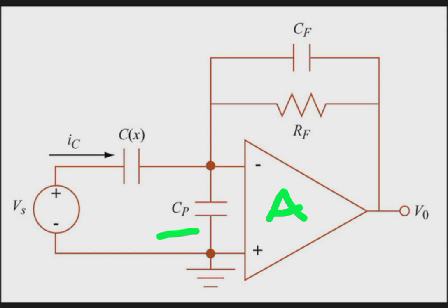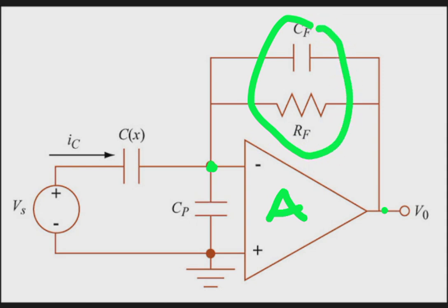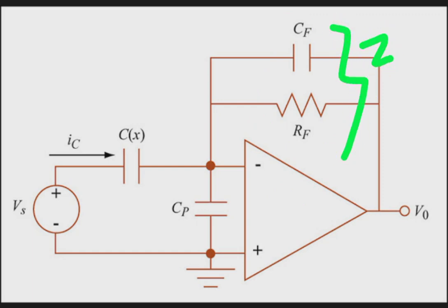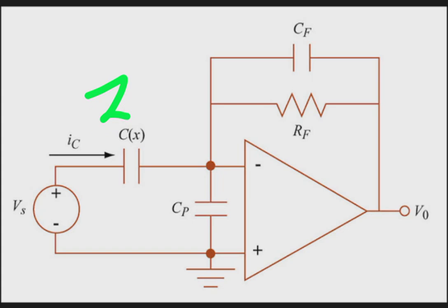There is a capacitance CX connected between the input voltage source VS and the negative pin. In the feedback path, the output is fed back to the input through a negative feedback network — a parallel combination of CF and RF — which makes up the effective feedback impedance ZF. The impedance of capacitor CX is called ZI.